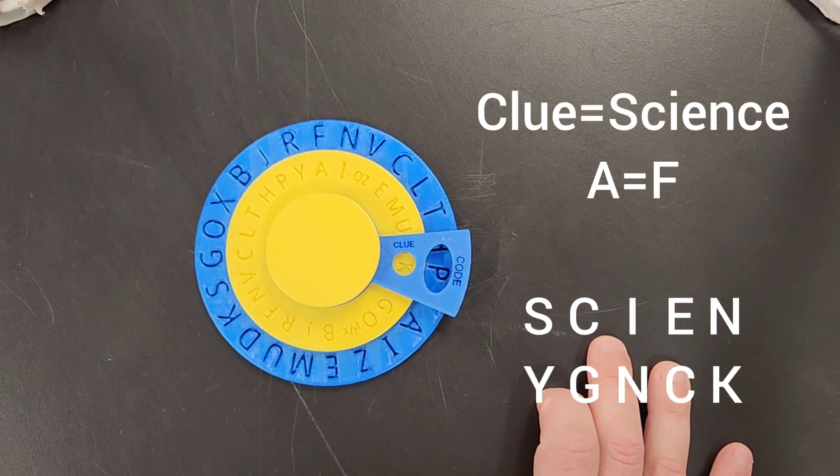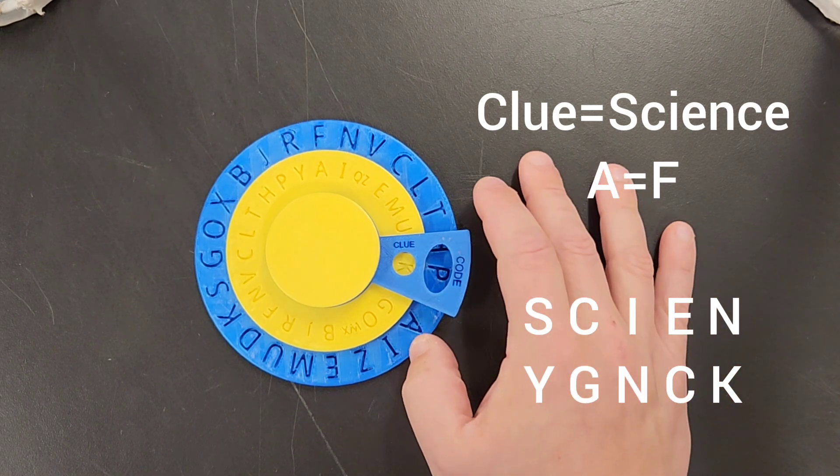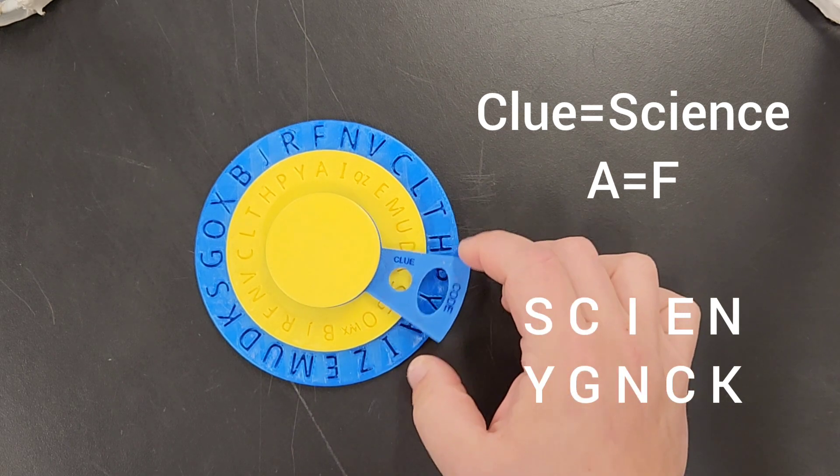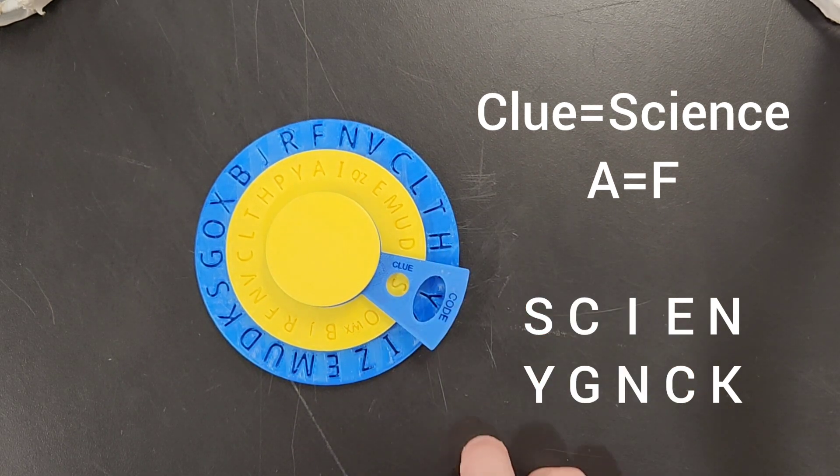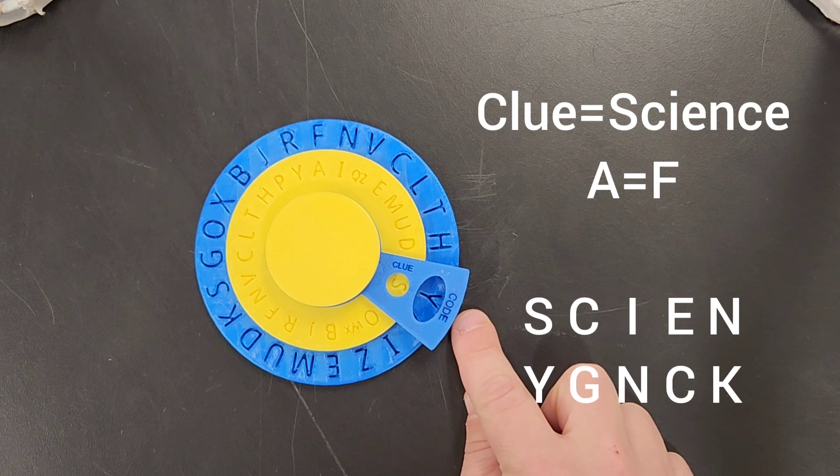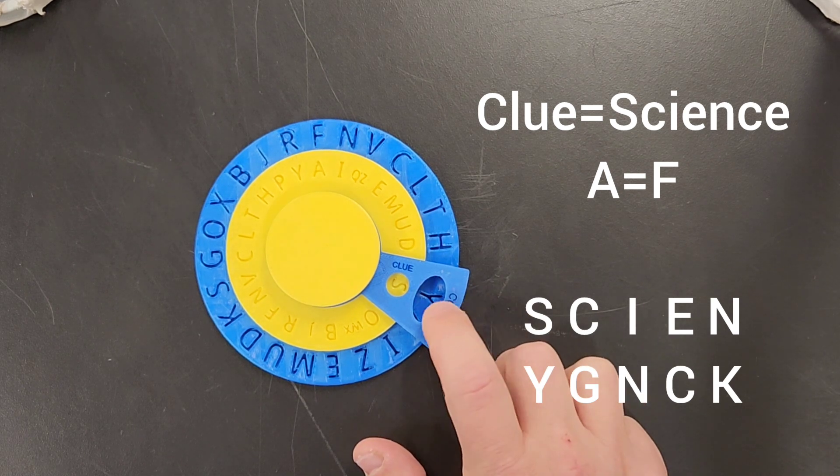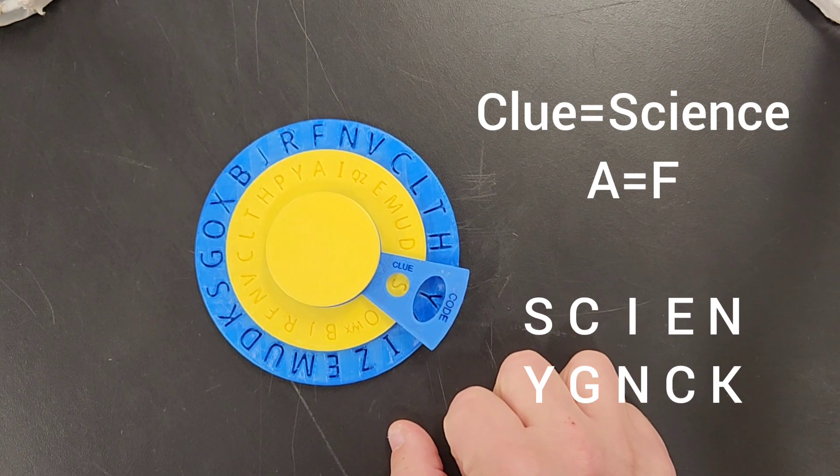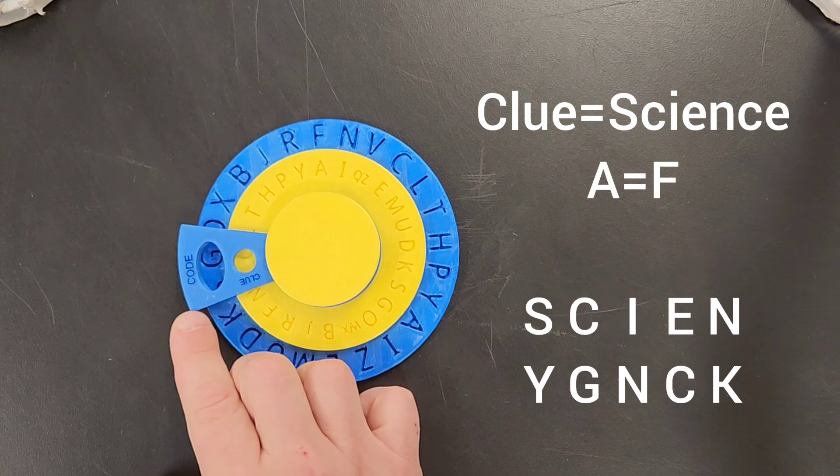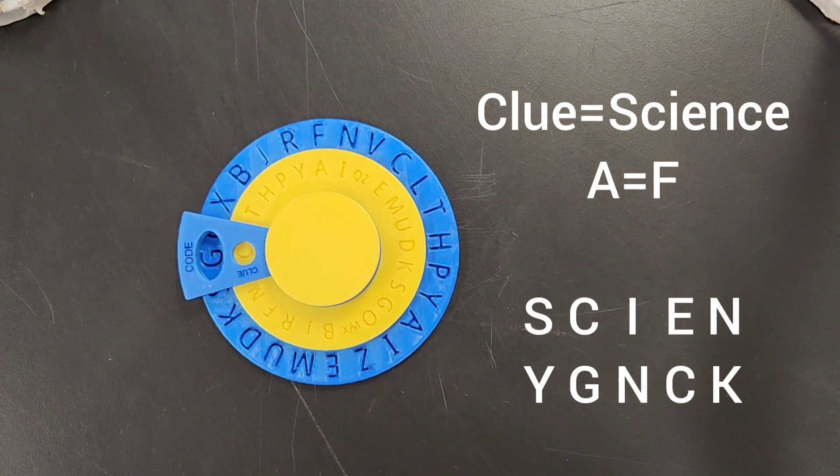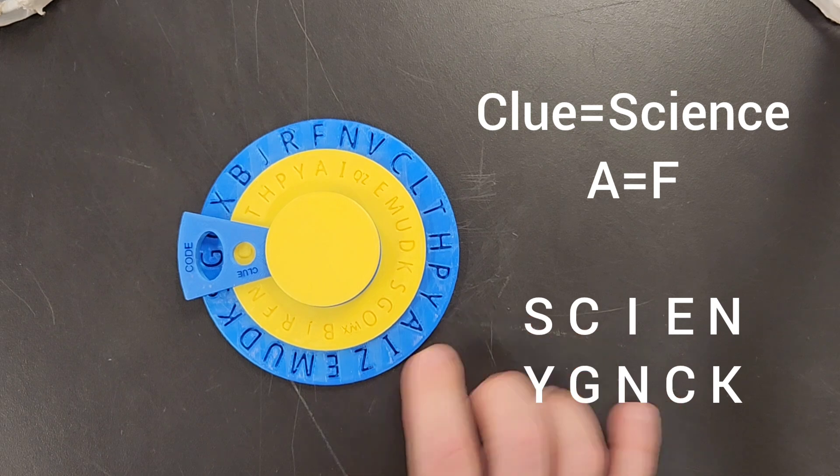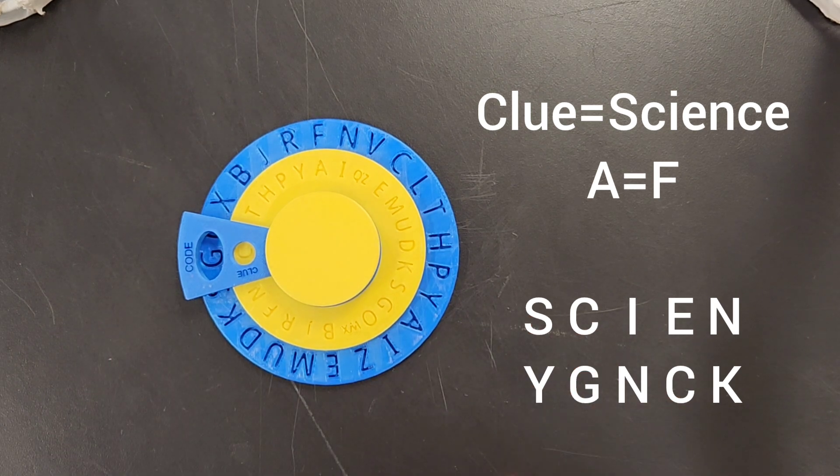So what's the first letter? S. So on the yellow, the clue, we're going to go set that to S. So that means that the code is going to be Y. Okay, so Y, what's the next letter in science? So we're going to write that over to C. And then C equals G. So we got Y, G is our first two letters of the code.